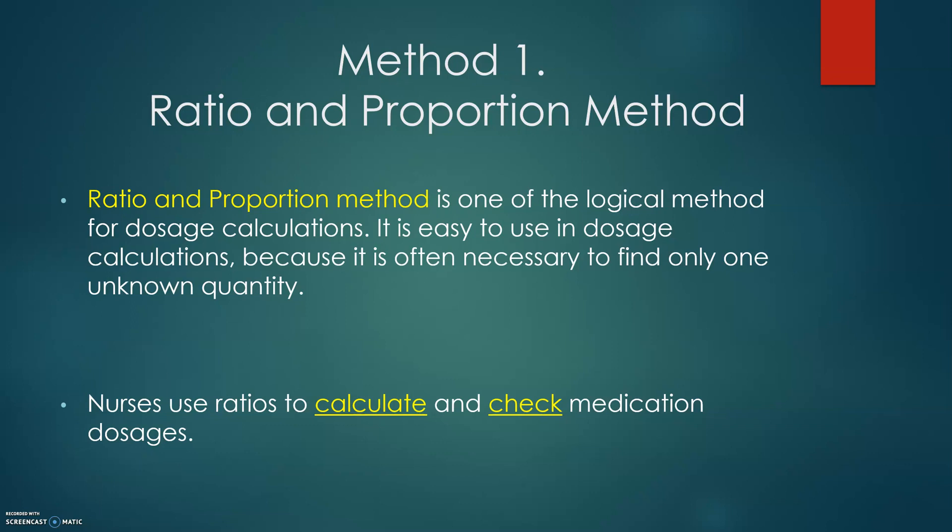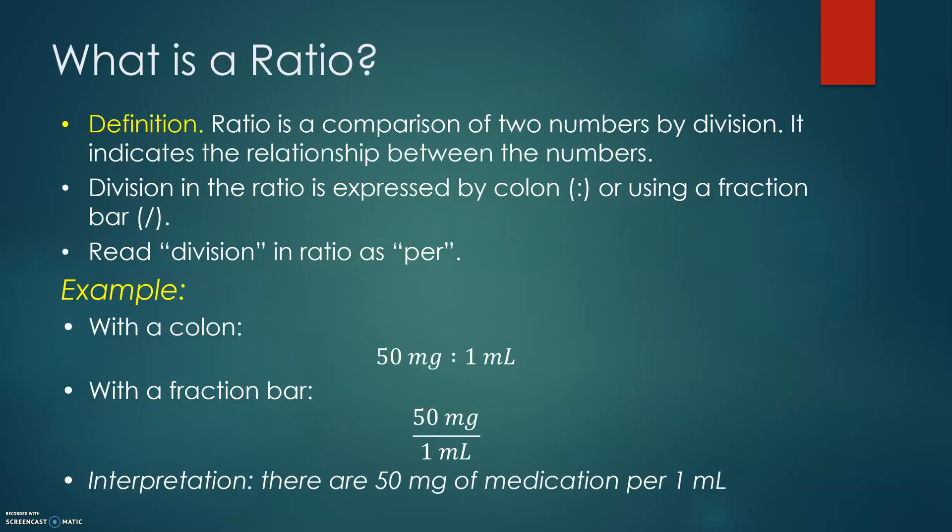Let's look at method one, ratio and proportion method. I'm pretty sure that this method is the most commonly used and well known from the arithmetic course, and we understand that usually we compare two quantities and if one quantity is increasing, the second quantity is also increasing, so therefore it's also an important method of calculation for dosages in the healthcare field. Nurses use the ratios either to calculate or check medication dosages.